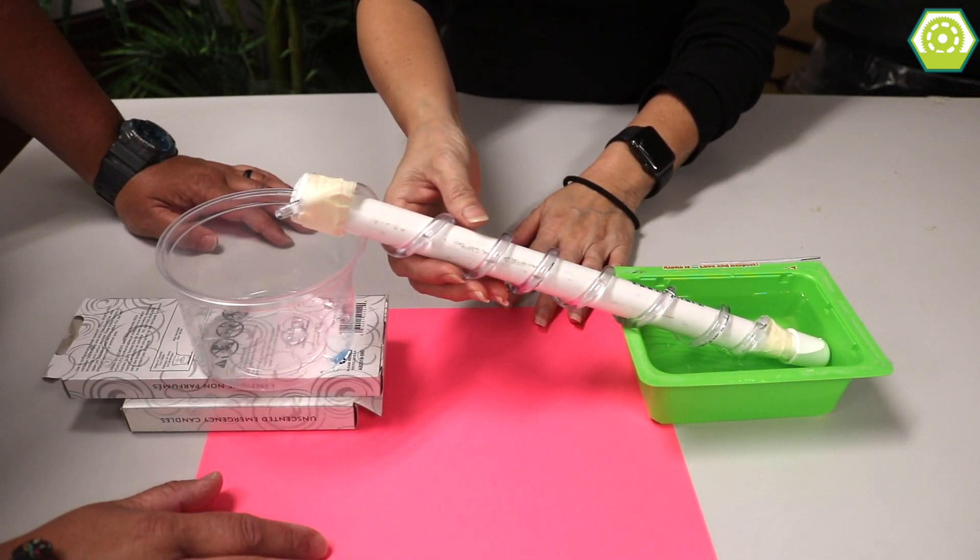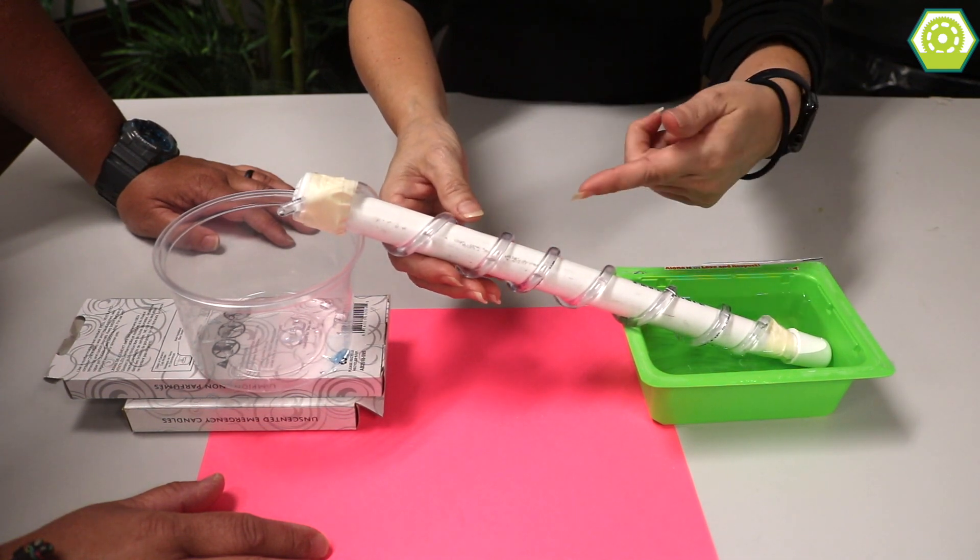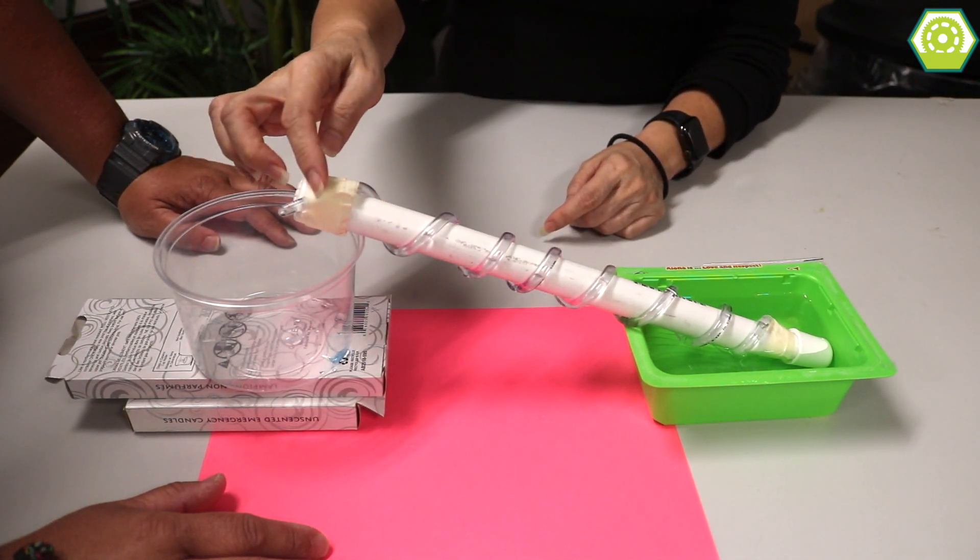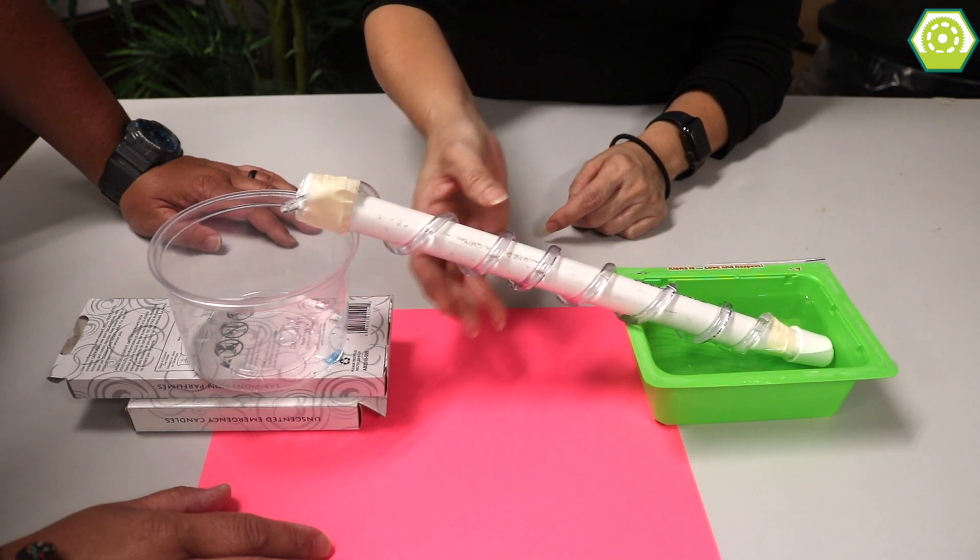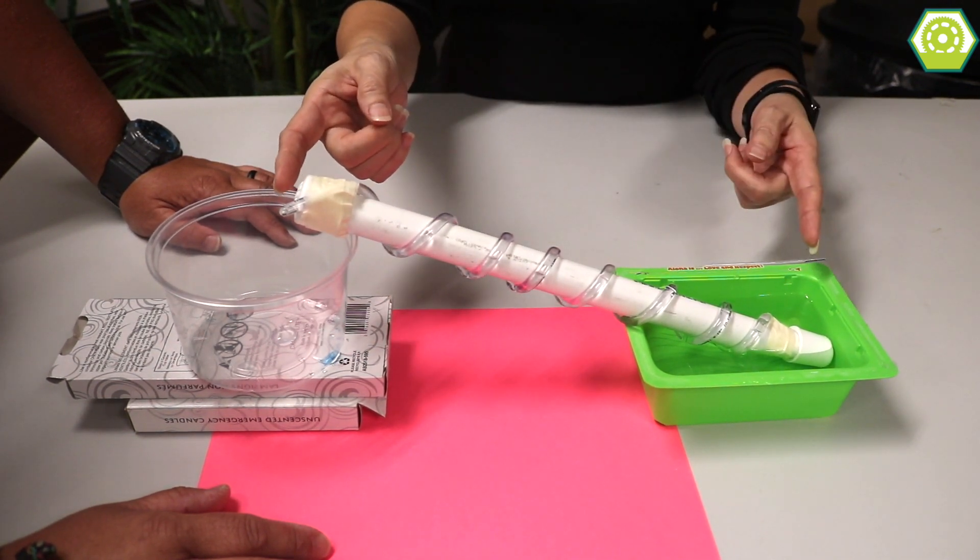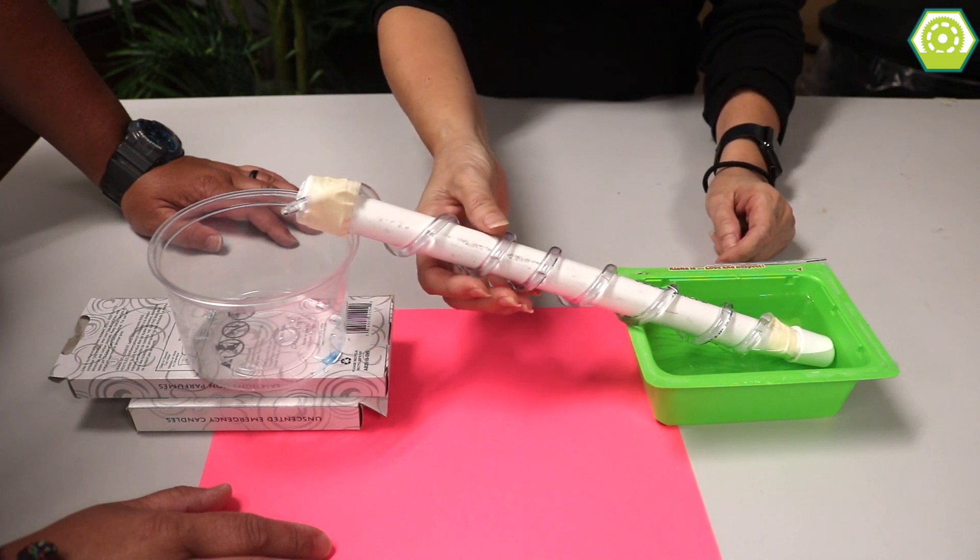So what I did was I wrapped some tubing, clear tubing, around some PVC piping, and then I put two caps on top to keep the water from actually going through here.